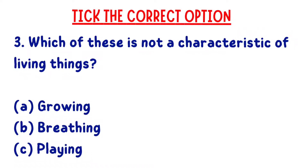Which of these is not a characteristic of living things? A: growing, B: breathing, C: playing. C, playing, is the correct answer.